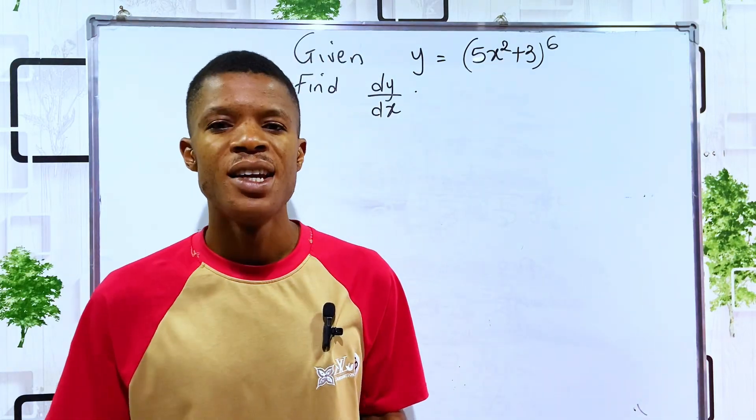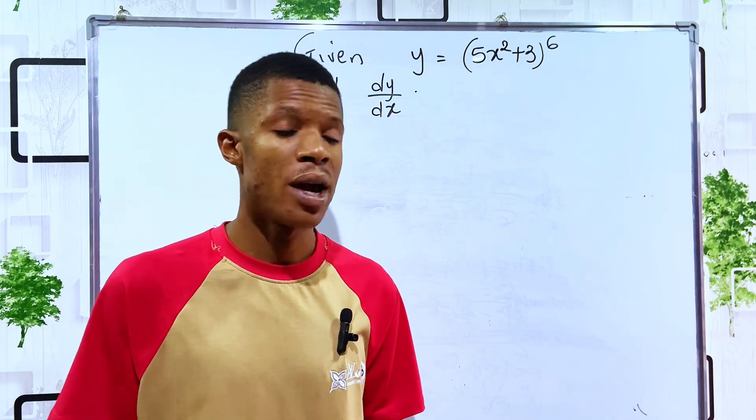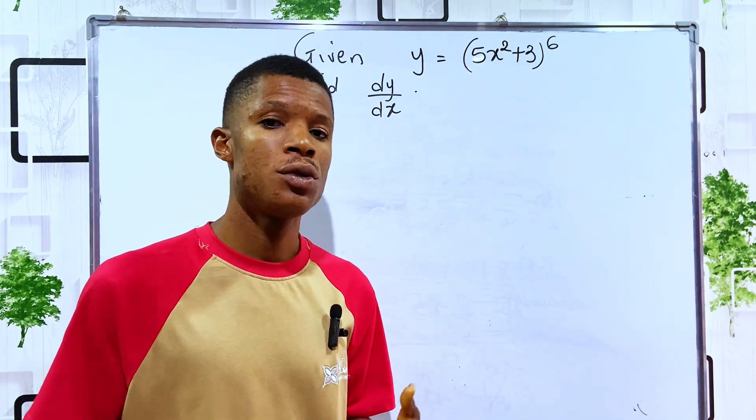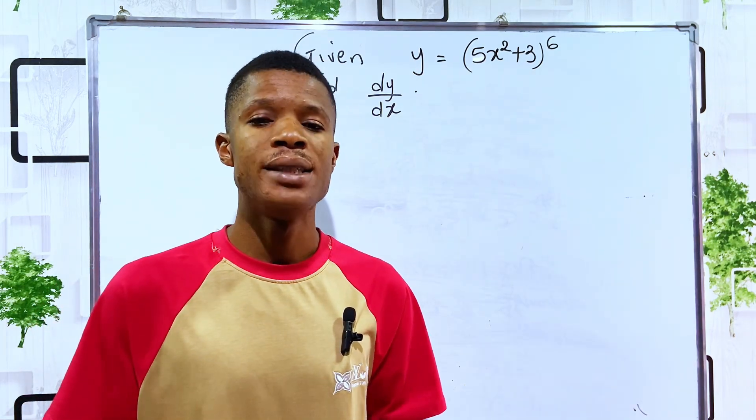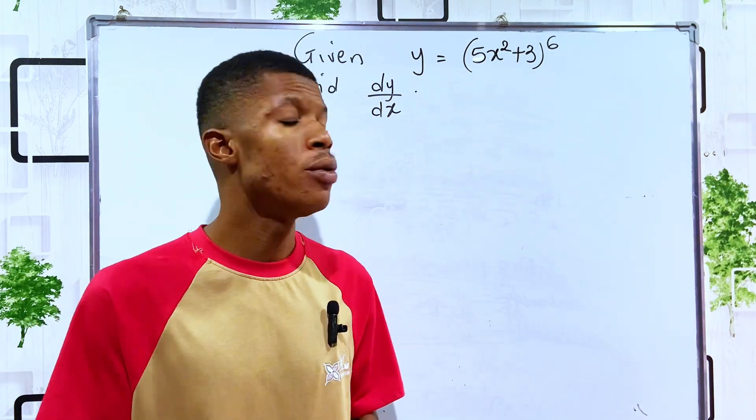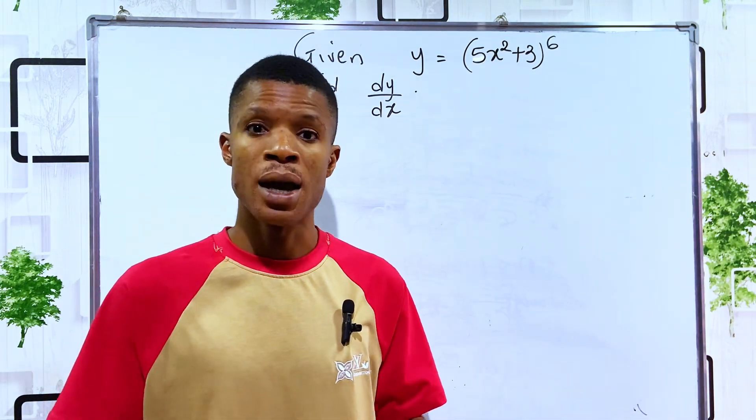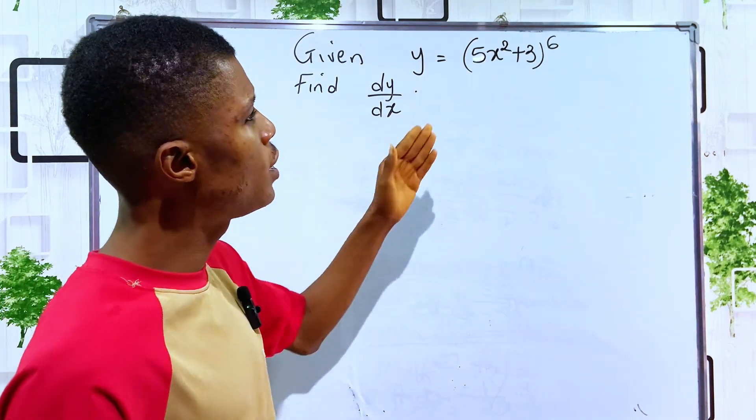Hey guys, welcome! In this video we are given that y equals 5x squared plus 3 to the power of 6. We are told to find dy/dx. To find dy/dx simply means we are going to differentiate the function of y with respect to x.